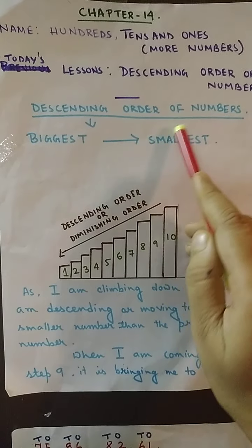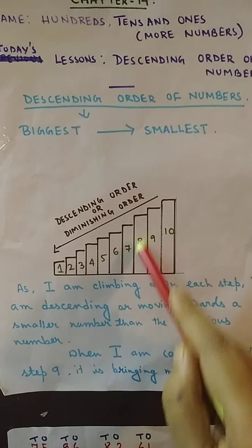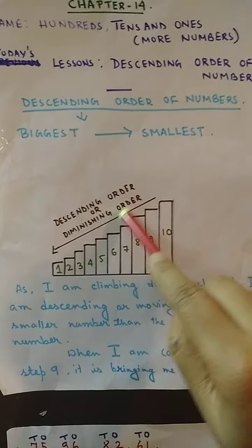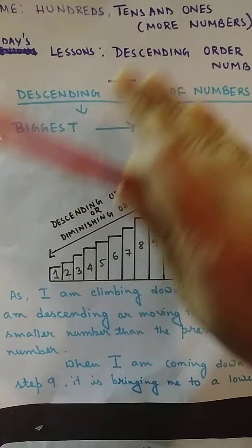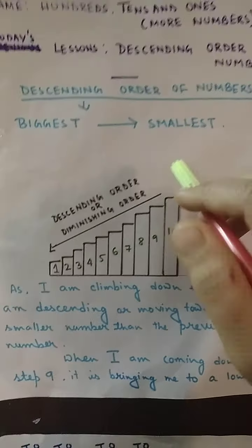Now, what does descending order of numbers mean? In ascending order, you have seen numbers arranged from small to big — the biggest number was written last. Today we will do the opposite thing. Today we will be arranging the numbers from the biggest to the smallest.